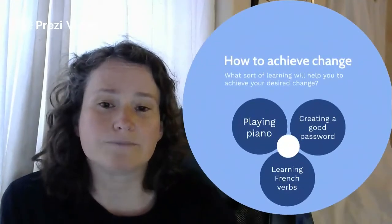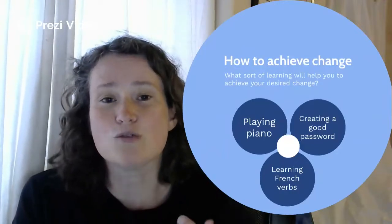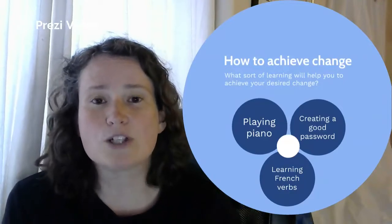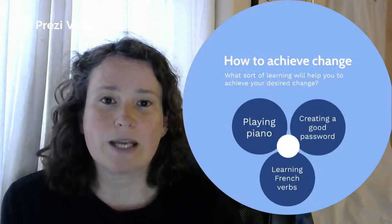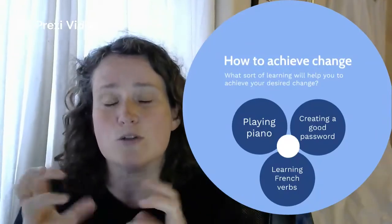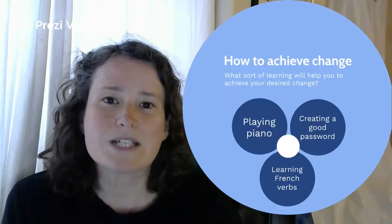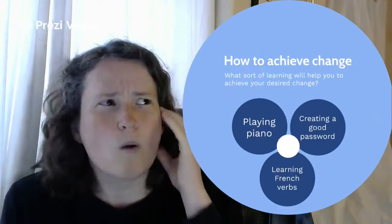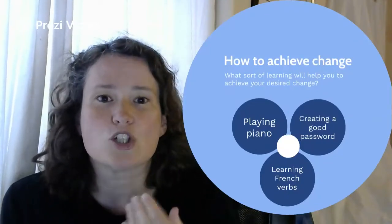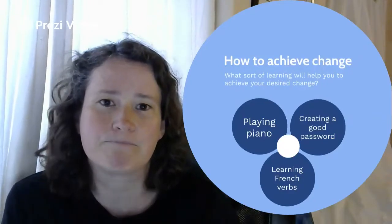And then how do we achieve that? What sort of learning will help your players get from where they are to the change that you want to make? I've identified three different learning tasks, all of which involve different kinds of learning. If you're learning to play a piece on the piano, you probably already know how the tune goes, and the learning is about how you get your fingers to make the sound that you want. Creating a good password when registering for a website is about recall — what makes a good password — and then an element of creativity: what password am I going to choose that I can remember and that will fulfil the conditions of this website's password criteria.